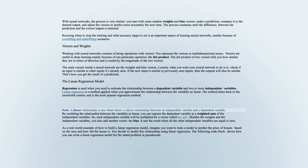The linear regression model. Regression is used when you need to estimate the relationship between a dependent variable and two or more independent variables. Linear regression is a method applied when you approximate the relationship between the variables as linear. By modeling the relationship as linear, you can express the dependent variable as a weighted sum of the independent variables. Each independent variable will be multiplied by a vector called a weight. Besides the weights and the independent variables, you also add another vector called the bias, which sets the result when all the other independent variables are equal to zero.